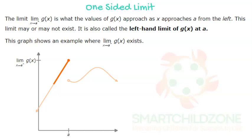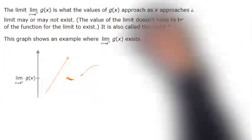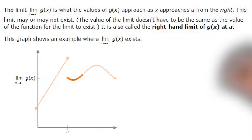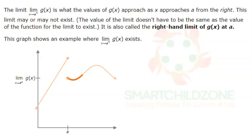Notice the negative sign after a — this shows what the values of g(x) approach as x approaches a from the left, and is called the left-hand limit of g(x) at a. When there is a positive sign after a, this shows what the values of g(x) approach as x approaches a from the right, and is called the right-hand limit of g(x) at a.